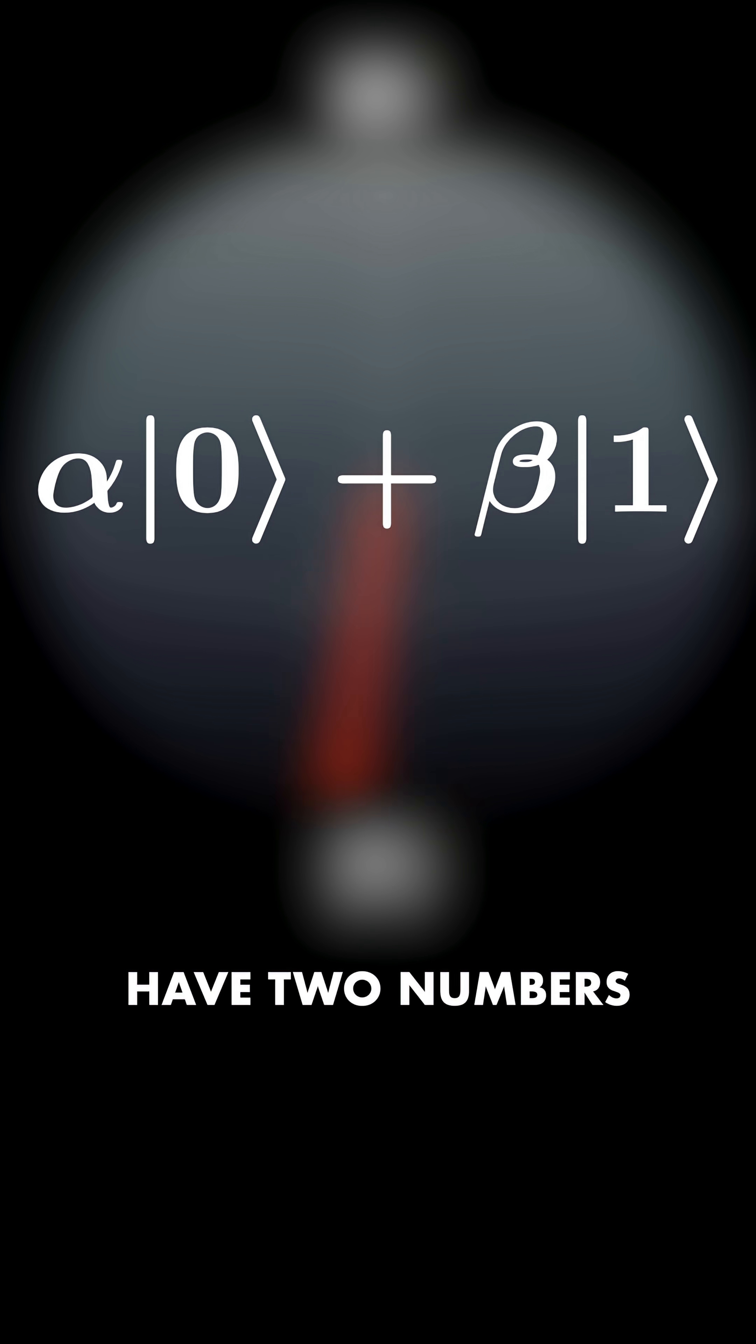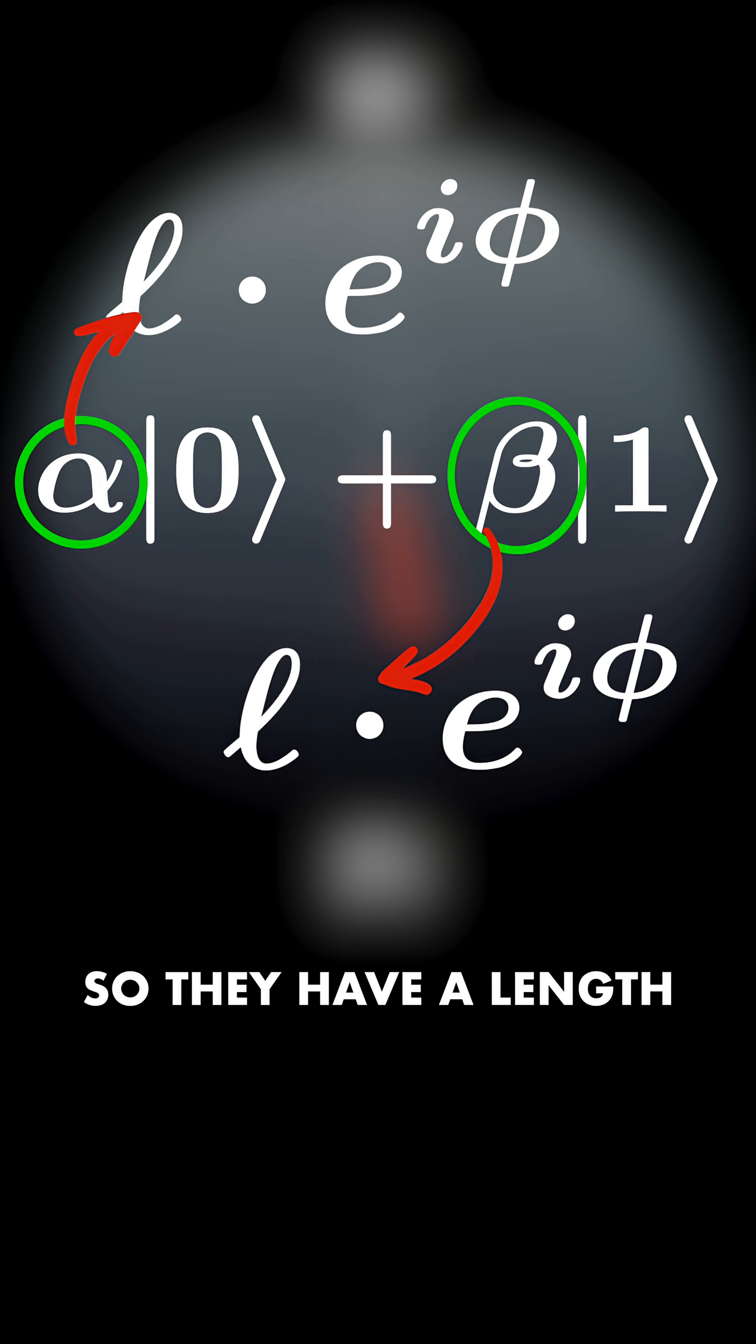This looks like we have two numbers, alpha and beta, but these are complex numbers, so they have a length and an angle each. Meaning, we have four numbers.